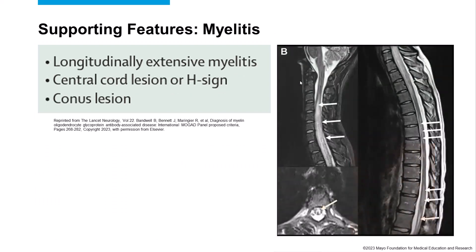Similarly, if you have a myelitis, then the myelitis should either be longitudinally extensive — extending over three vertebral segments — it should be central, and sometimes it has an H sign where it involves just the gray matter on axial images, or if it involves the conus. These are all suggestive features and count as supporting features towards a myelitis episode.